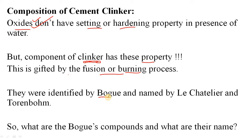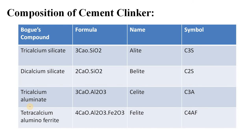These new materials were first identified by Mr. Bogue, and that's why they are called Bogue's compounds. These Bogue's compounds were later named by Le Chatelier and Torrenbaum by different names. We will now discuss what the Bogue's compounds are. After formation of the clinker, all the oxides are totally transformed into different types of materials which have cementing property — that means after addition of water they set and become hardened. Bogue observed and identified four types of these compounds.